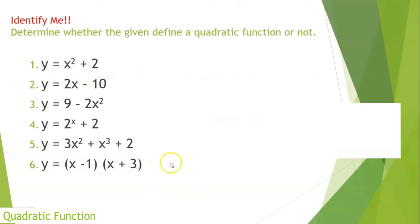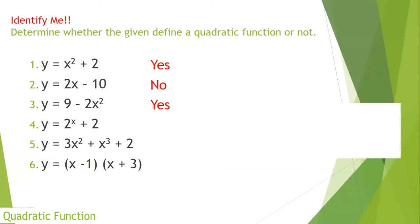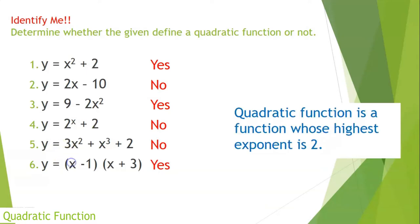Now, how are you going to identify whether a function is quadratic or not? I have here six different equations or functions. Let's identify whether they are quadratic or not. Number one is yes, number two is no, number three is yes, four no, five no, and six is yes. When you say quadratic function, it is a function whose highest exponent is two.